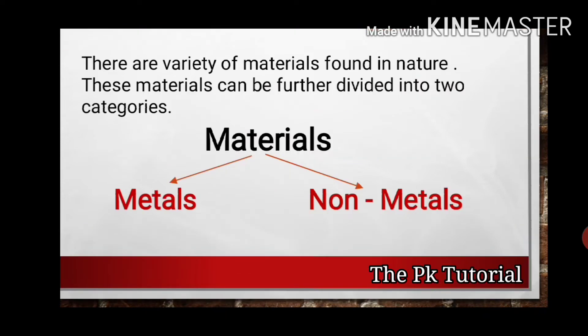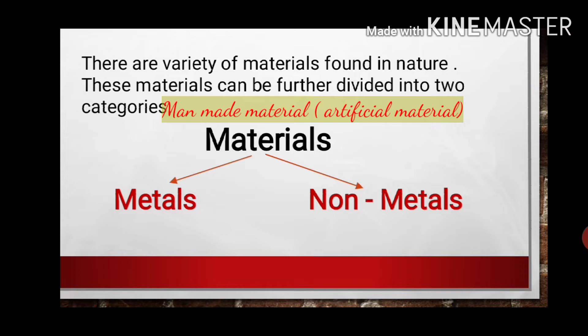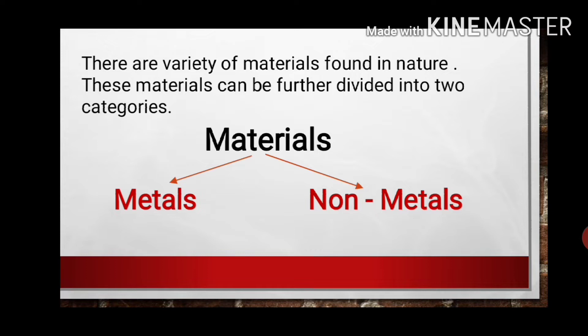The first term that is coming in this chapter is materials. There are a variety of materials found in nature, and the materials which are found in nature are called natural materials, while the materials which are made by man are called man-made. In this chapter we are going to discuss the materials found in nature, which can be categorized into two categories: metals and non-metals.